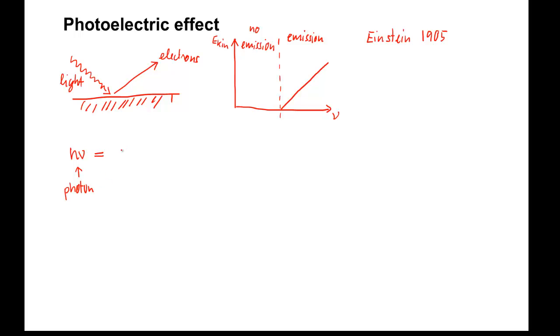This energy is used to eject the electron from the material, which requires a certain amount of energy denoted by uppercase letter phi, and called the work function. Any excess energy is carried away by the electron in terms of kinetic energy, which is, of course, one-half m v squared.